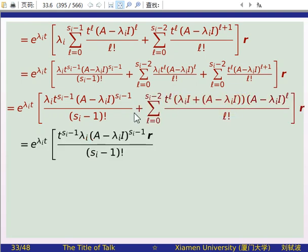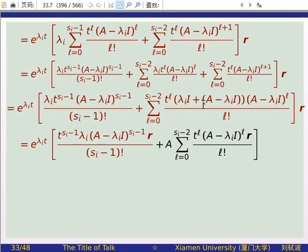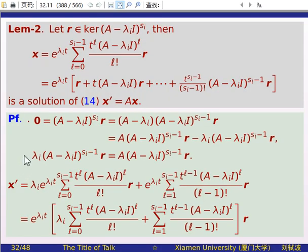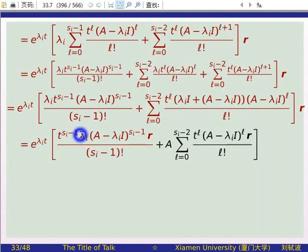Now using our previously derived equality — that lambda_i * (A - lambda_i*I)^{s_i-1} * r equals A * (A - lambda_i*I)^{s_i-1} * r — we can replace lambda_i times that expression by A times it. Copying the second summation and observing that this separated term is precisely the term for l = s_i - 1 in the general sum, we can absorb it back into a summation running from l = 0 to s_i - 1. Moving the common A outside, the remaining summation is from l=0 to s_i-1, which is precisely our original x.